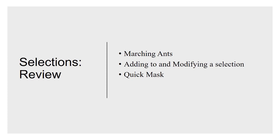Adding to and modifying a selection is an important thing to remember how to do. You can do that in a variety of different ways with the buttons in the options panel or by using keyboard shortcuts. Typically Shift and Alt work well for that. Hold down the constraints — Shift and Alt — when you're creating them, and you can transform a selection and all that good stuff. Go back to the previous lesson and review that if you want to.